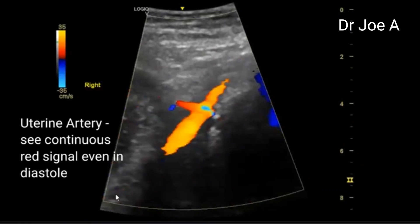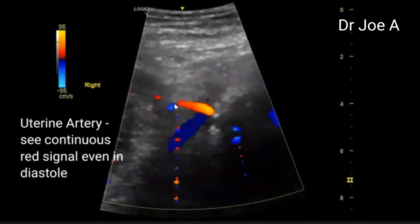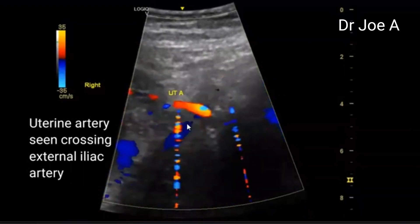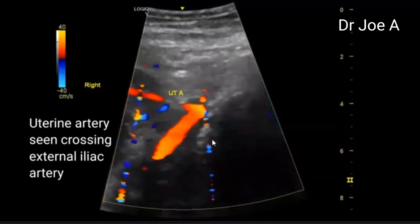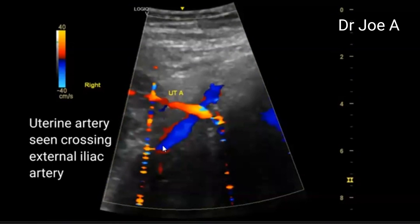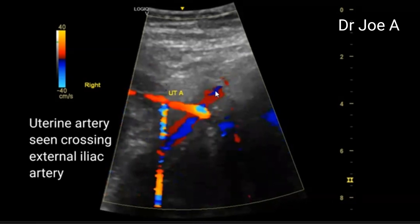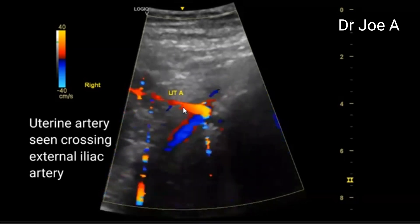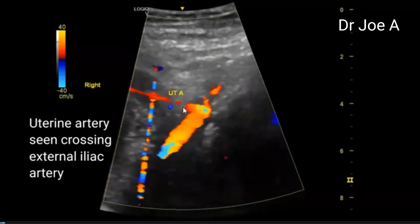In obstetric Doppler, one of the first things to see is the uterine artery. This is the right uterine artery, and that is the right external iliac artery. The right uterine artery passes over the right external iliac artery as it goes towards the uterus medially. The external iliac artery changes color from blue to red — blue signifies reverse flow during diastole, and red signifies forward flow. However, the uterine artery shows continuous red flow, meaning there is continuous flow even during diastole with no reverse flow. This is one of the hallmark signs identifying the uterine artery.